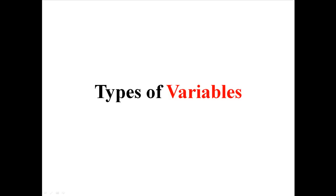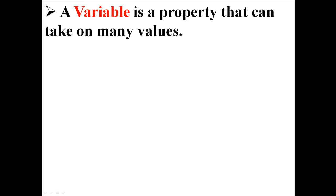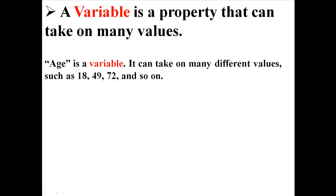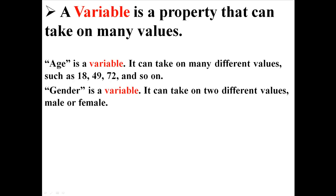I'm going to talk about different types of variables. First of all, what is a variable? A variable is a property that can take on many values. For example, age is a variable because it can take on many different values, like 18, 49, 72, and so on. Gender is also a variable that can take on two different values: male or female.